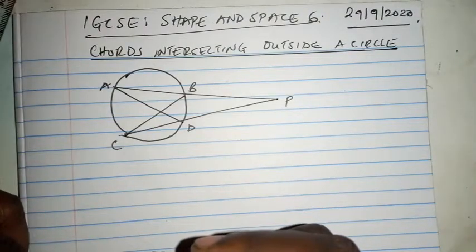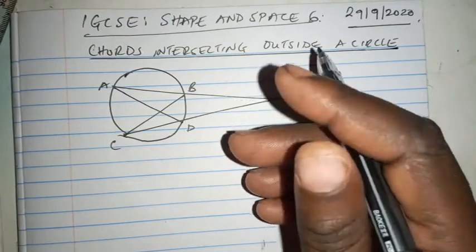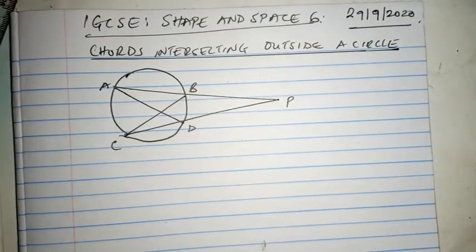Good morning and once again welcome to my YouTube channel, Pearson Excel International Maths by Mr. Kamoto. Today we want to wind up the topic of shape and space six of the Excel International IGCSE 9-1 Maths.